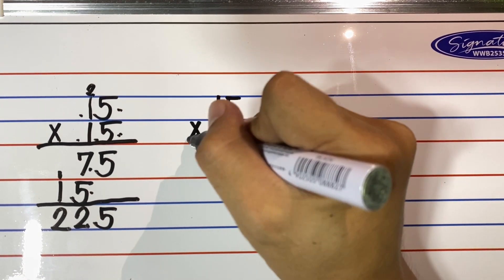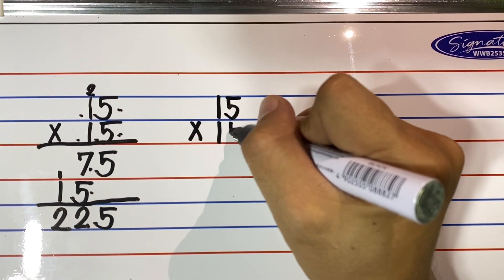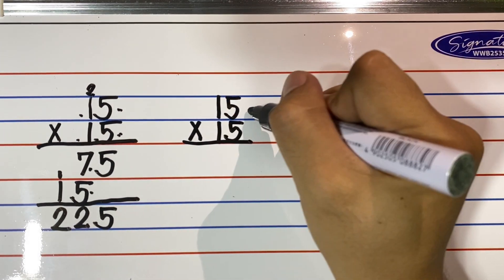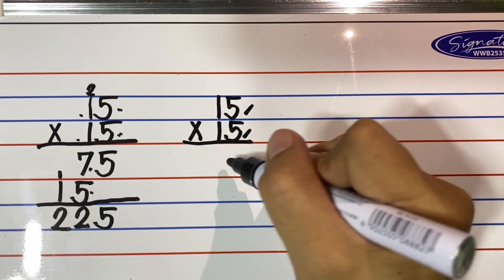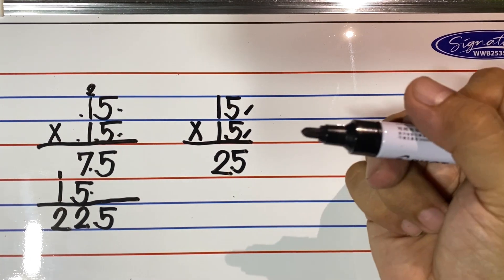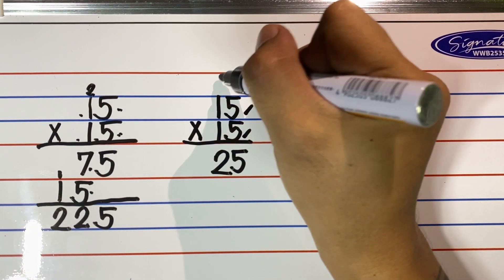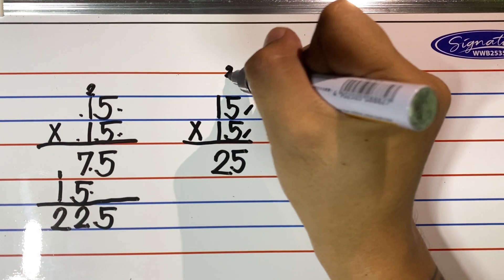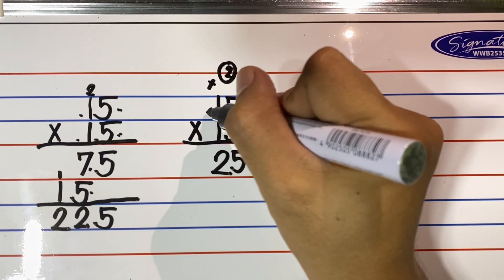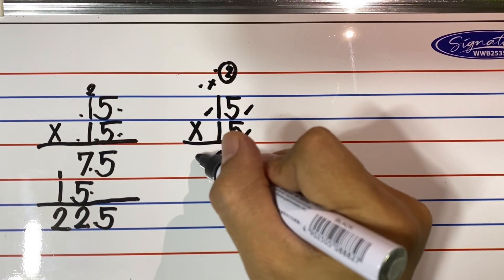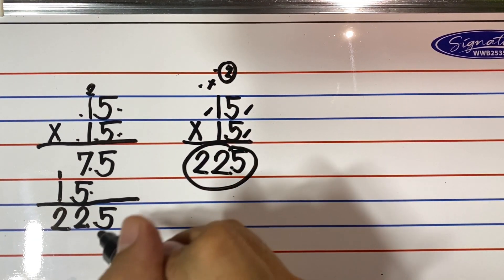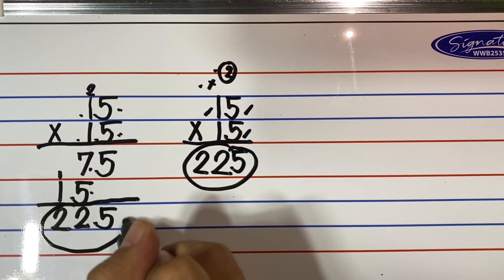Here it goes: 15 times 15 — multiply 5 and 5 and write 25 immediately below the equal sign. Then look at the tens digits, which are both 1. Think of the counting number next to 1 — it is 2. Just multiply 1 and 2 to get 2. The final product becomes 225. Compare — are they the same?